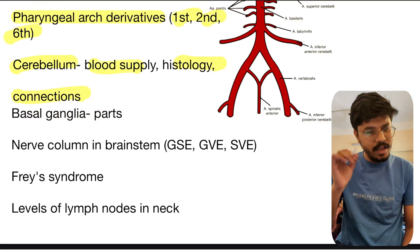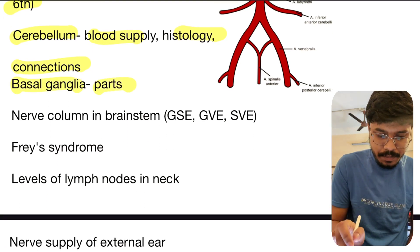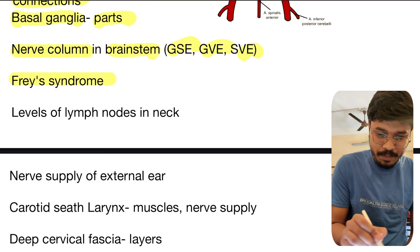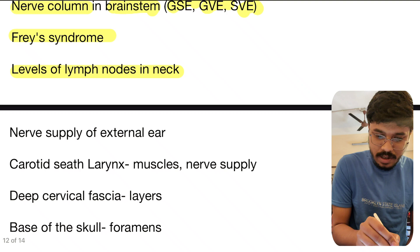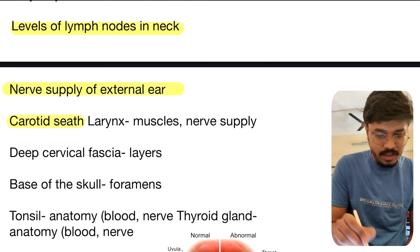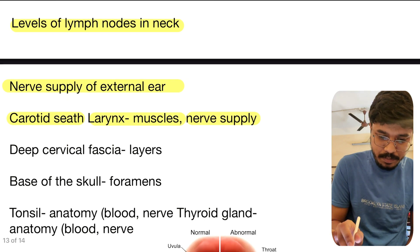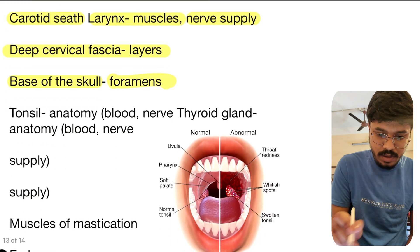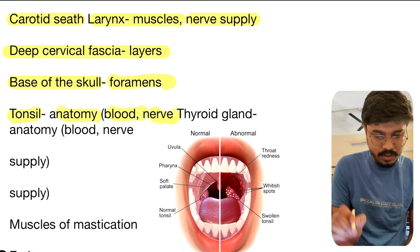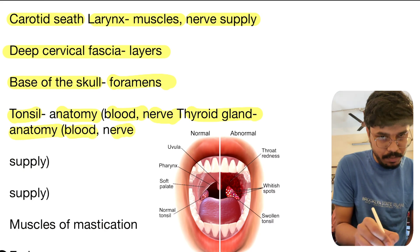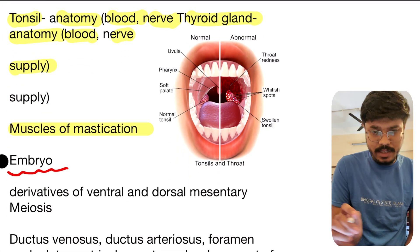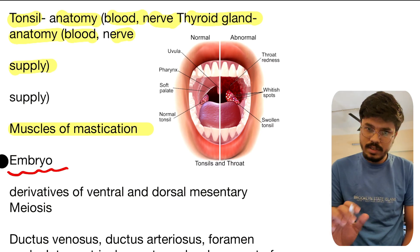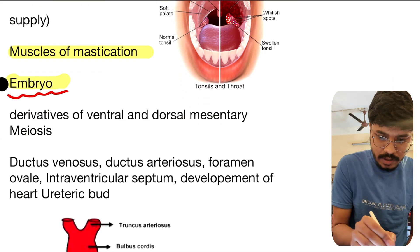Pharyngeal arch derivatives are very very important, especially first, second, and sixth pharyngeal arches. Cerebellum blood supply, histology, and connections — this topic is repeated every year. Basal ganglia parts, nerve columns in brainstem (GSE, GVE, SVE, etc.). Phrenic syndrome, levels of limb, note in neck, nerve supply of external ear, carotid sinus, larynx muscles and nerve supply, layers of deep cervical fascia, base of the skull especially foramina, tonsil anatomy — blood supply and nerve supply. Thyroid gland anatomy, blood supply, and nerve supply.